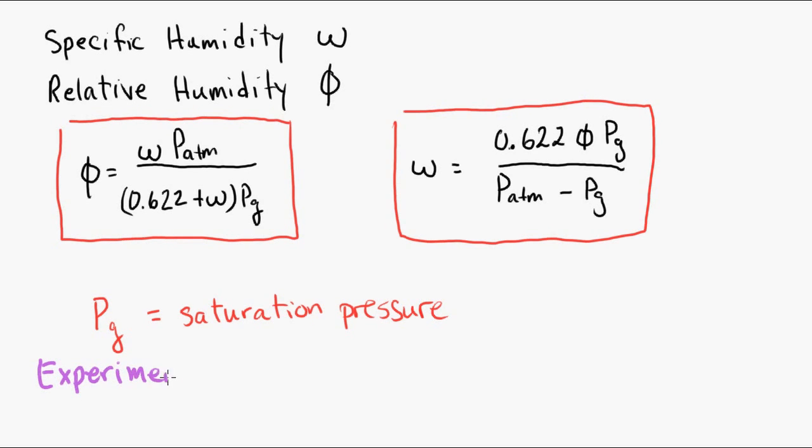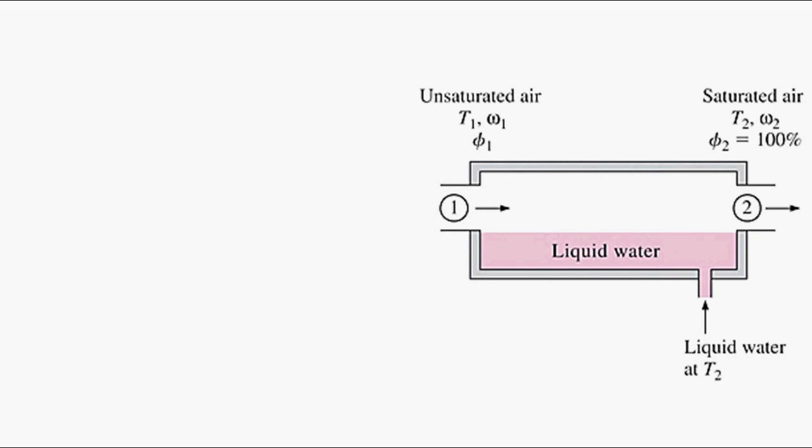What we want to know is, experimentally, how do we measure either omega or phi? To do that, we'll consider something called an adiabatic saturator. Adiabatic means there's no heat transfer.